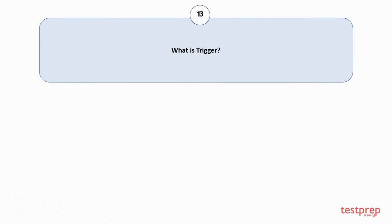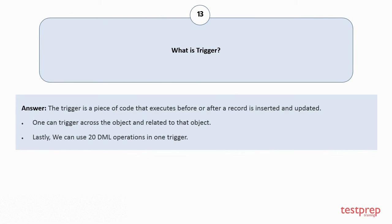Question number 13: What is a trigger? 1. A trigger is a piece of code that executes before or after a record is inserted and updated. 2. One can trigger across the object and related to that object. 3. We can use 20 DML operations in one trigger.